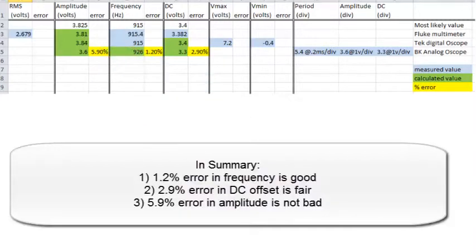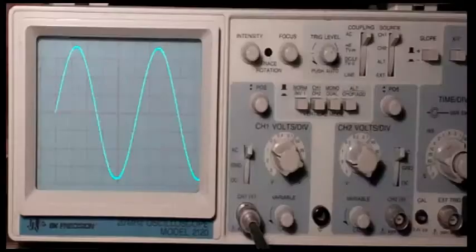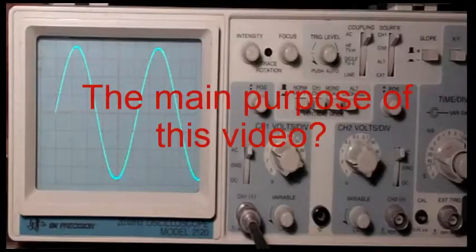In summary, the 1.2 percent error in frequency is good, the 2.9 percent error in DC offset is fair, and the 5.9 percent error in amplitude is not bad.